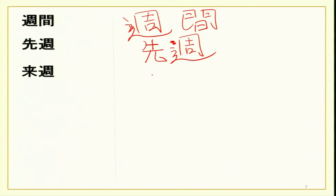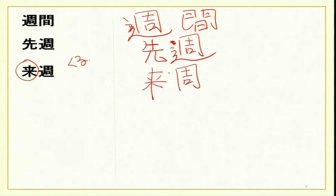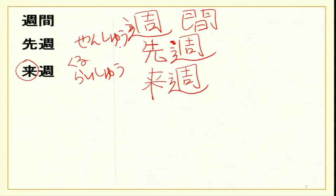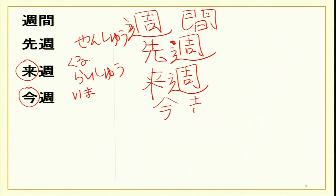Now this is shukan — you have done shu and kan a number of times. Senshu means 'last week' — 'sen' from sensei and 'shu.' Raishu means 'next week' — the kanji for 'rai' is also read as 'kuru.' Konshu means 'this week' — kon is also read as 'ima,' meaning now.